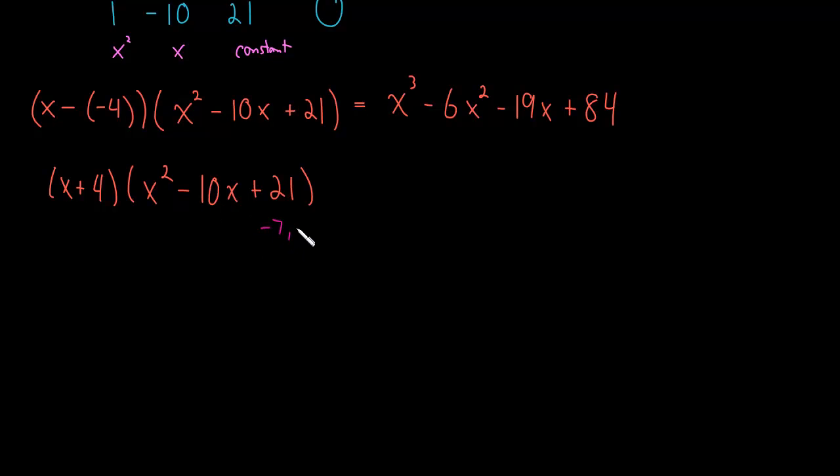So with a little thought we get minus 7 and minus 3. These multiply to positive 21 and they add up to minus 10.